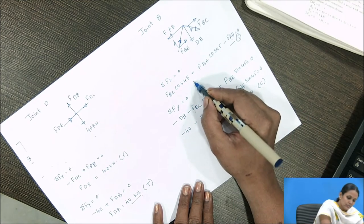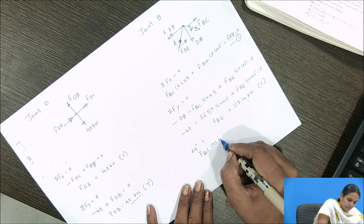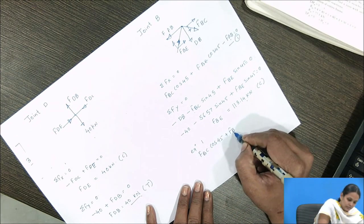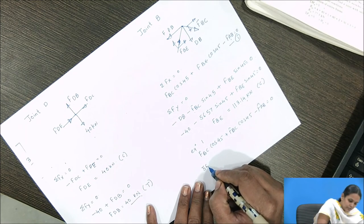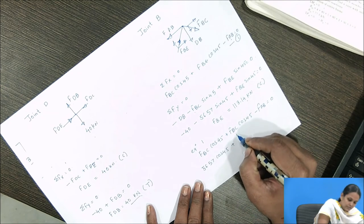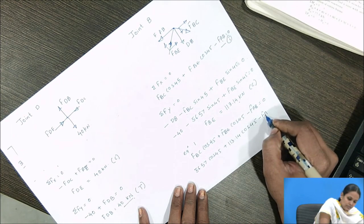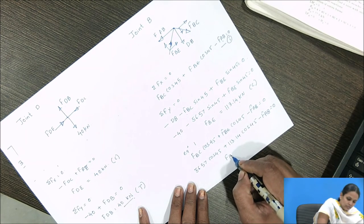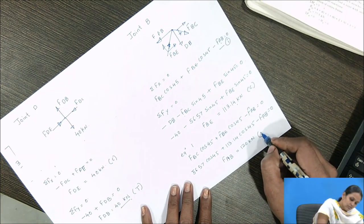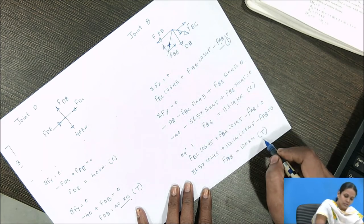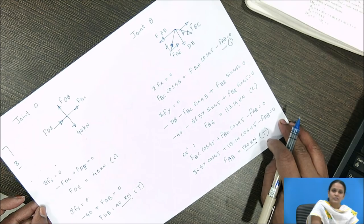Substituting BE = 113.14 kN into equation 1 for summation F of x: force BC cos 45 plus force BE cos 45 minus force AB = 0. That is 56.57 cos 45 plus 113.14 cos 45 minus force in AB = 0, giving force in AB = 120 kN tensile. Likewise, we determine forces in all the members of the truss.